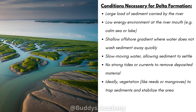When we're talking about a calm sea or lake, we mean that the sea must have a very weak current. You are then going to need a shallow offshore gradient where water does not wash sediment away quickly. So far: you need a large load of sediment in the river, a weak current at the ocean or river mouth, and a shallow sea.